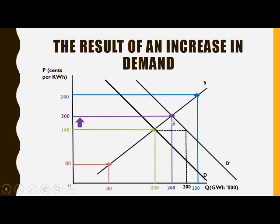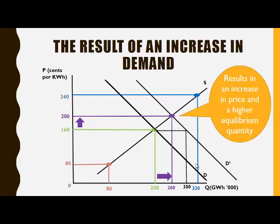At this price level, the equilibrium quantity where the quantity demanded and quantity supplied are equal is 260. So the equilibrium quantity has also increased due to the increase in demand. Both the price as well as the equilibrium quantity have increased due to the increase in demand.